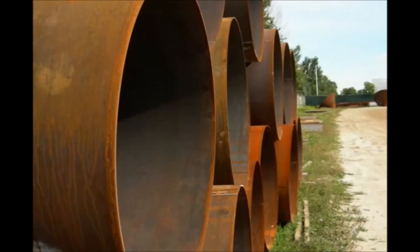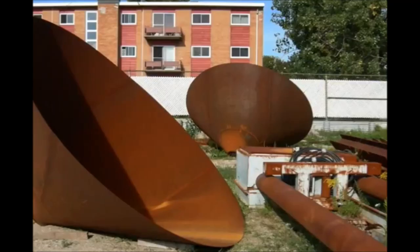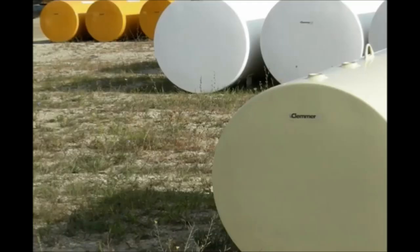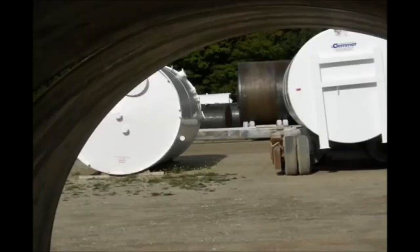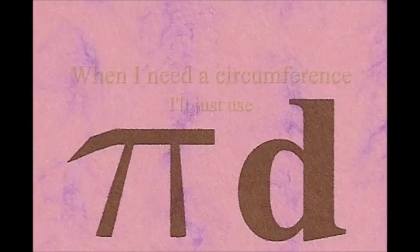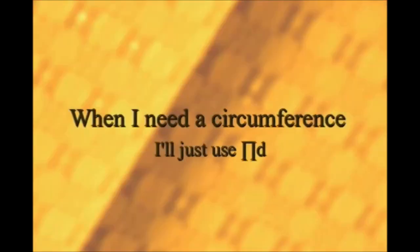Here is a circle, it knows how to get around. It has a radius from center to rim. And its diameter's a line that goes from side to side while passing through the center, now isn't that simple. Pi r squared sounds like area to me, when I need a circumference, I'll just use pi d.